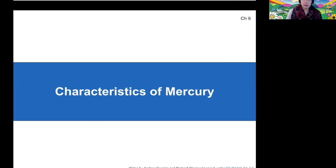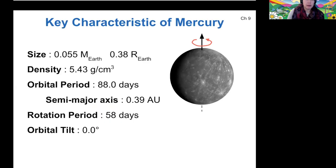Starting out talking about the key characteristics of Mercury, it is a rather small planet as far as terrestrial worlds go. It's the smallest of the terrestrial planets, the smallest of any of the planets. It has a relatively high density though, so it's not quite as dense as Earth, but it's up there. Its orbital period and rotation period have an interesting relationship to each other.